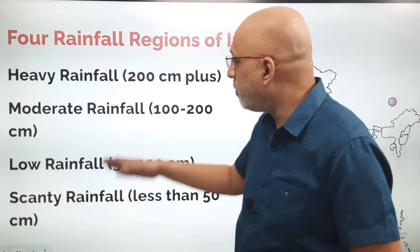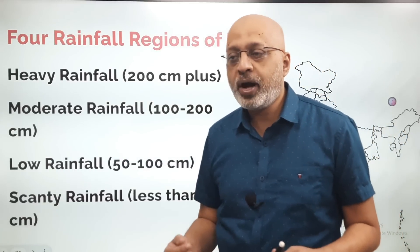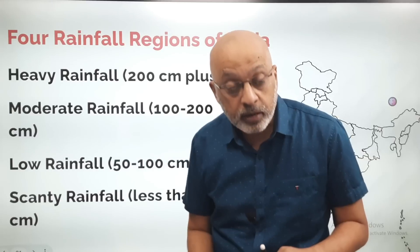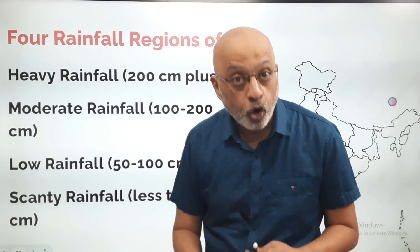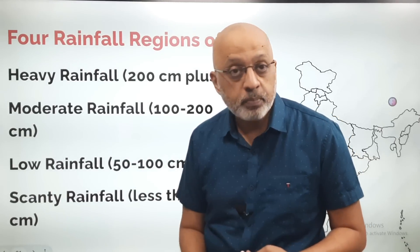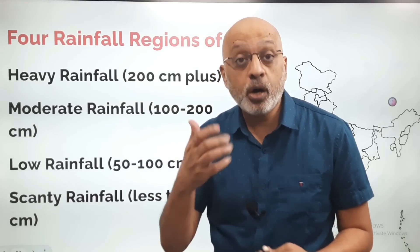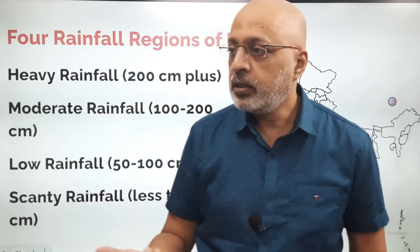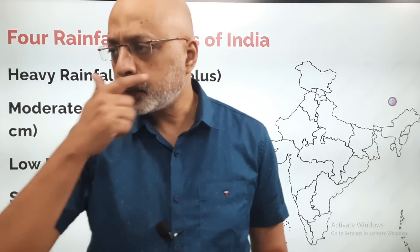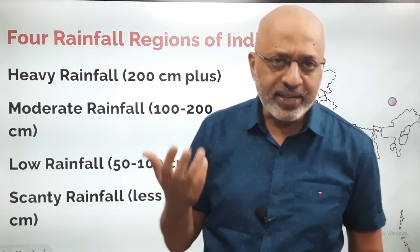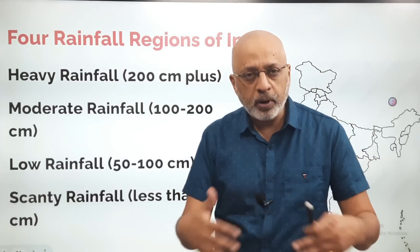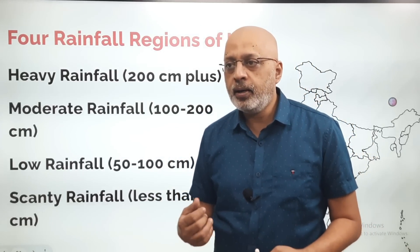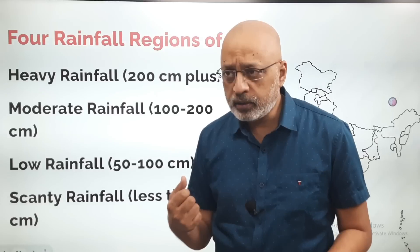The moderate rainfall area includes the southern part of Tamil Nadu during the winter months of November and December, north Andhra Pradesh, eastern part of Maharashtra, Odisha, Bengal, Madhya Pradesh, and the Ganga Valley. The low rainfall area would be the Deccan Plateau — which covers Telangana, parts of Maharashtra, Karnataka — and some parts of southern Andhra Pradesh.